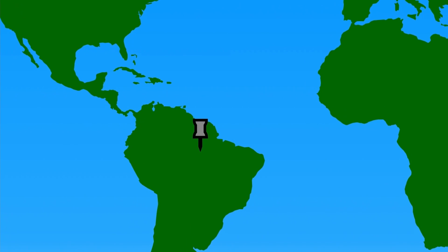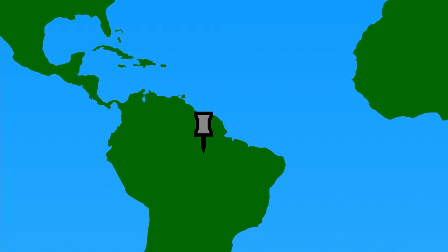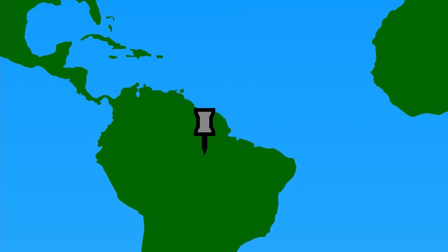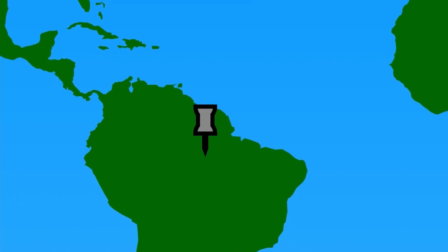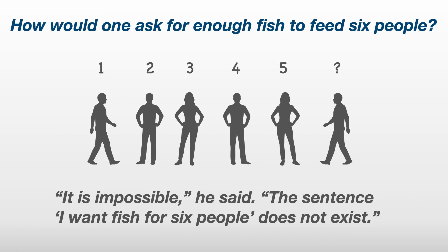The Munduruku don't have words for numbers greater than five. As anyone would, Alex asks questions about how the Munduruku navigate practical problems involving numbers. For example, how would one go about asking for enough fish to feed six people? It's impossible, the linguist said.